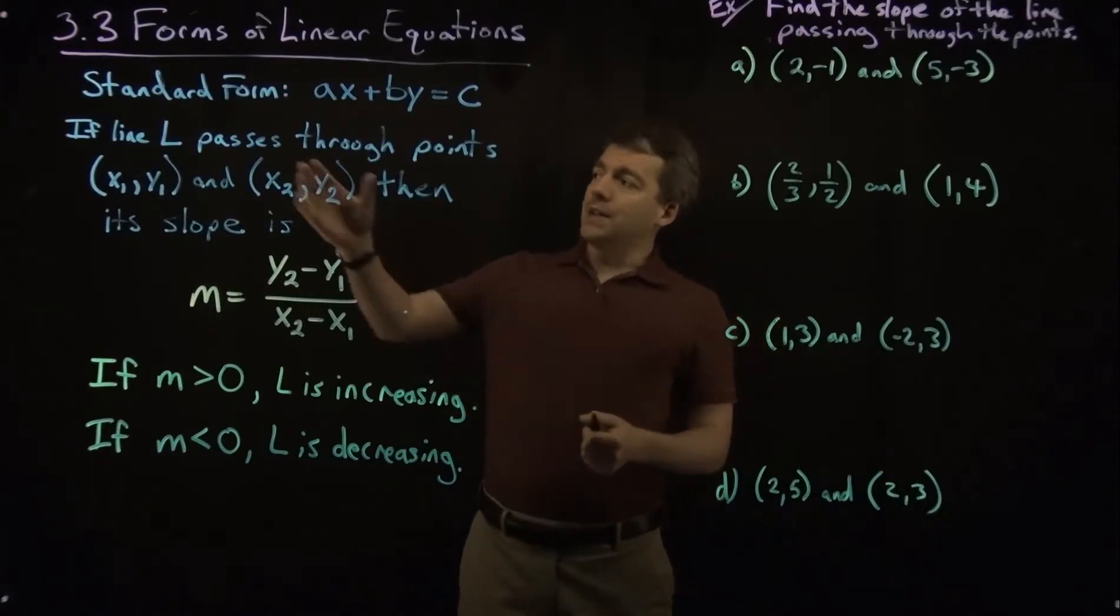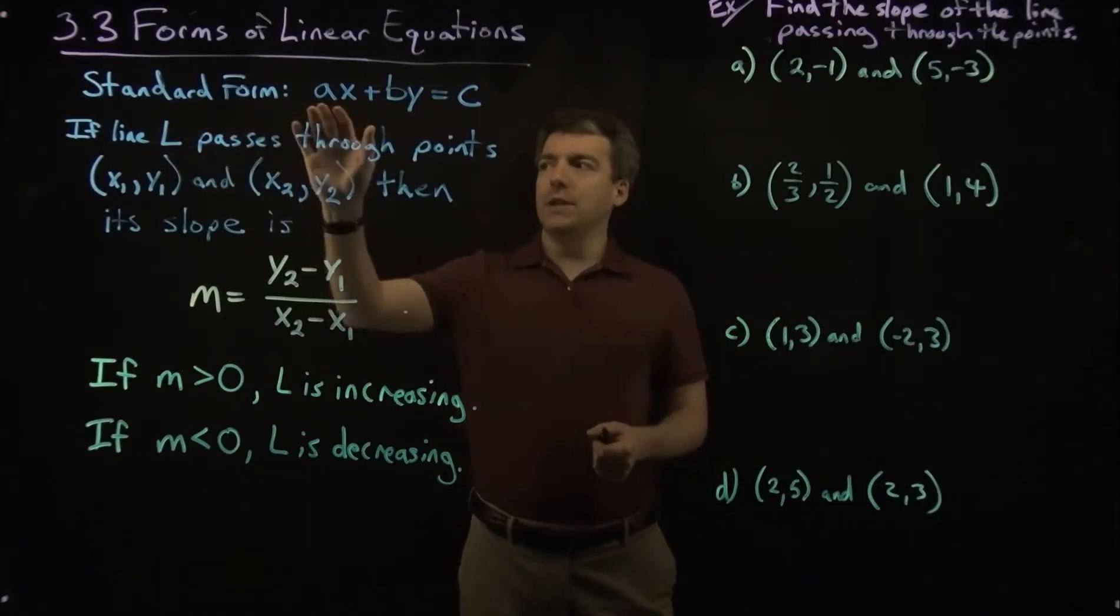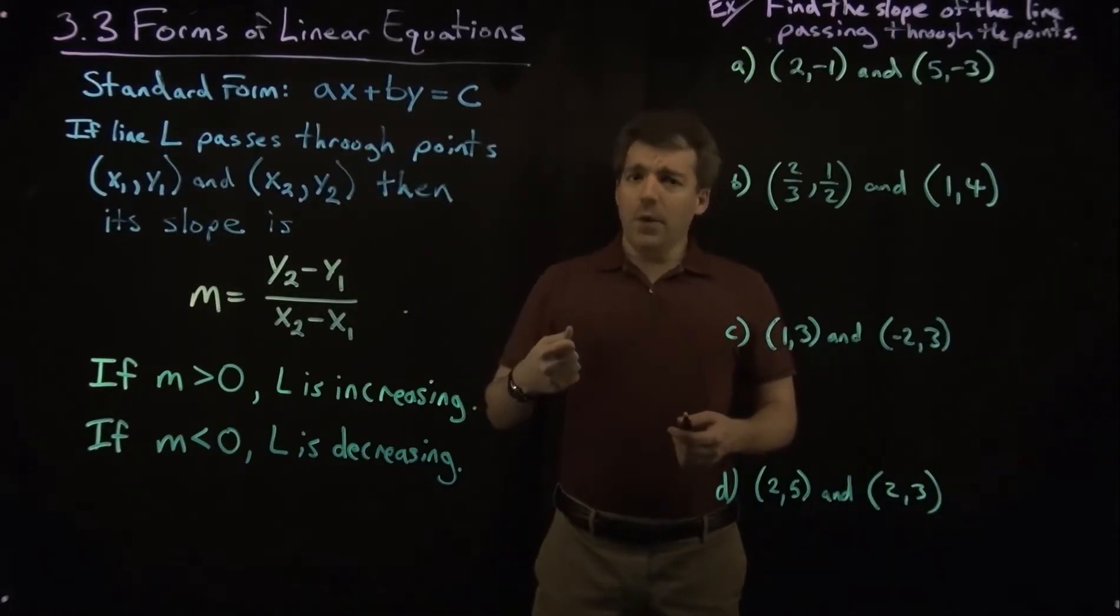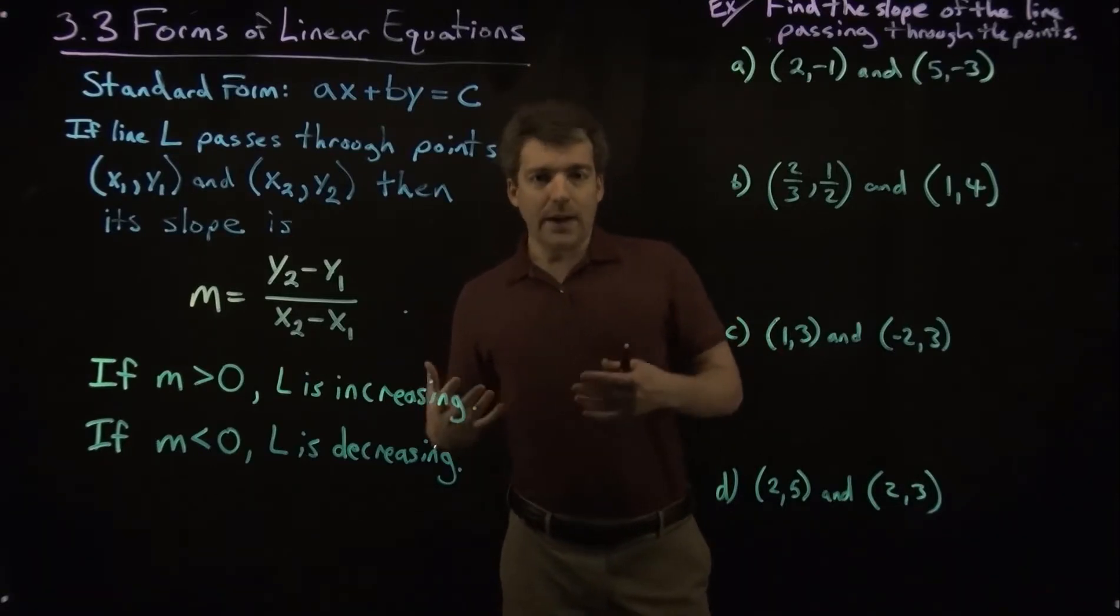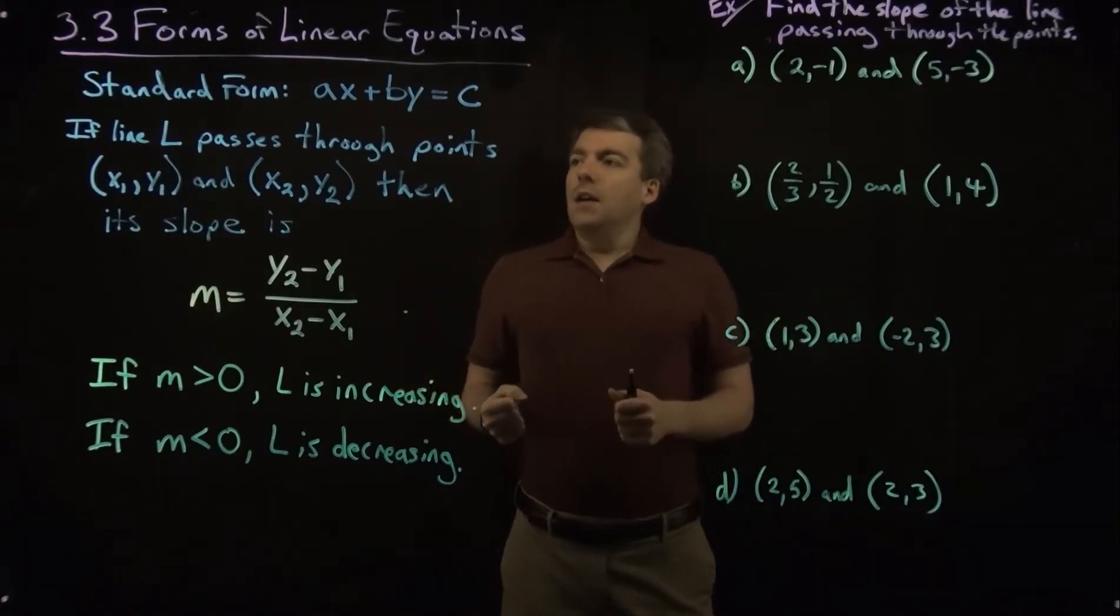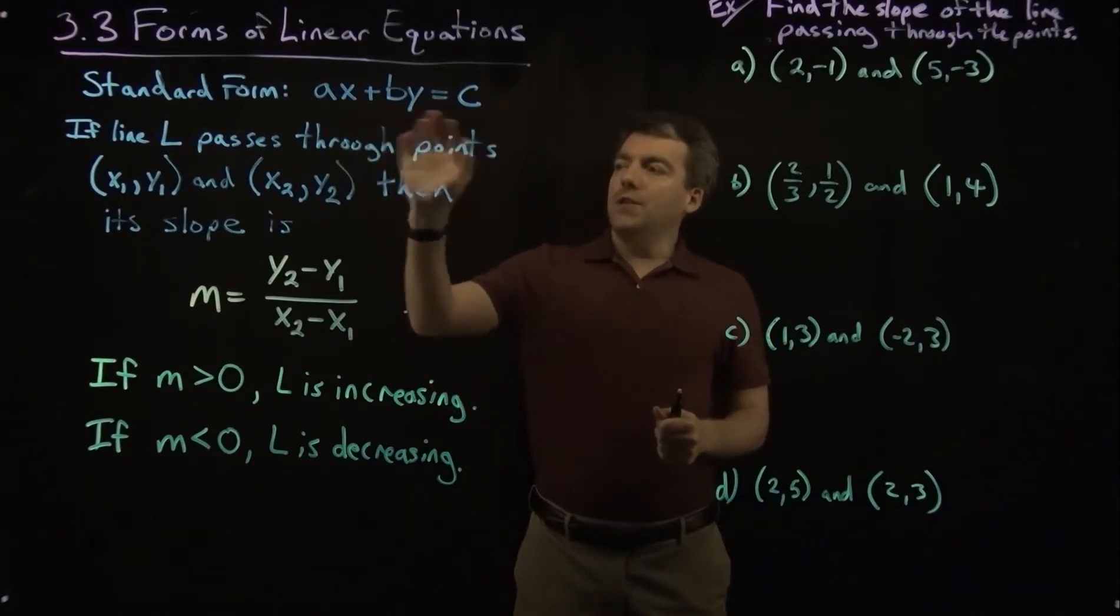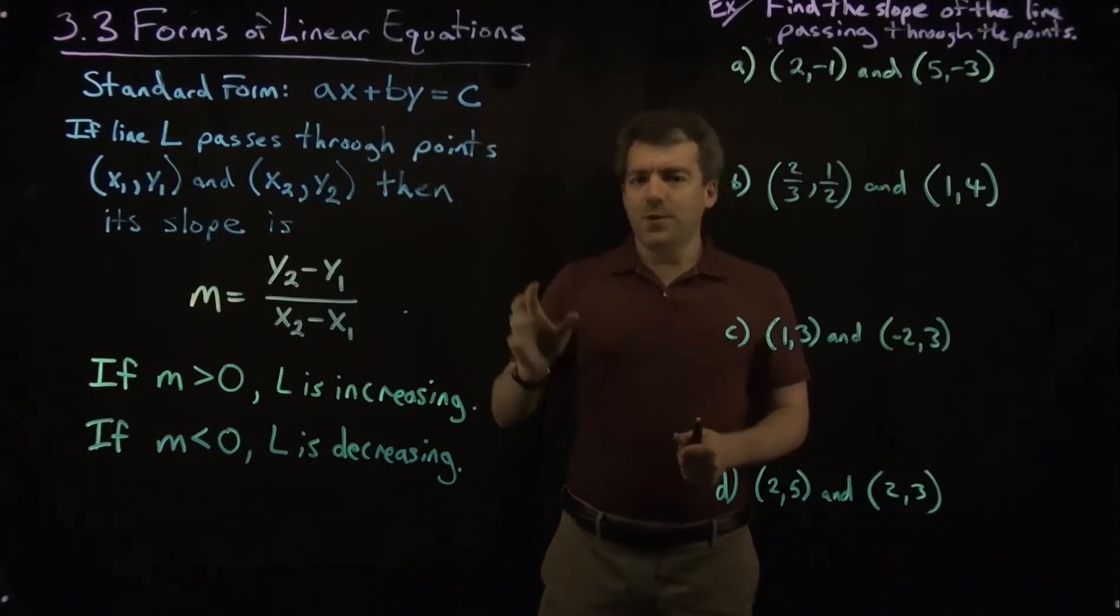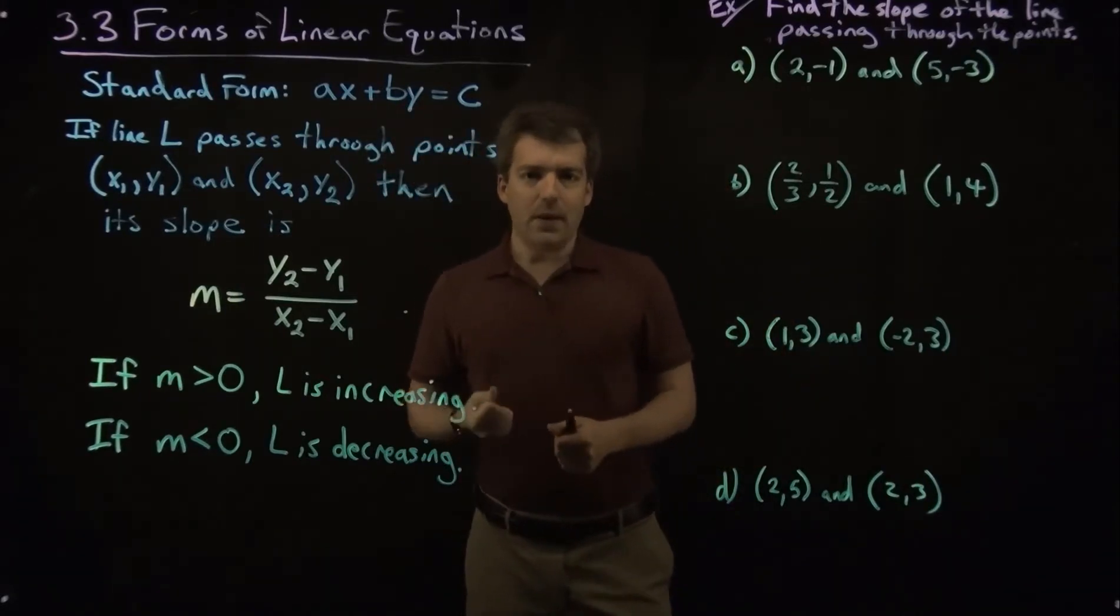Recall that we had the standard form, which was ax plus by equals c. That's not very useful if we're interested in talking about whether the line is increasing in slope or decreasing in slope. It also, we also have to work a little bit to find the intercepts, so it's not a very useful form if we're looking for information about the line.